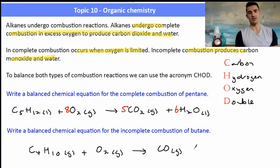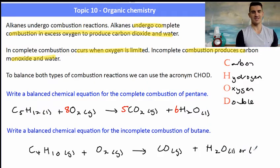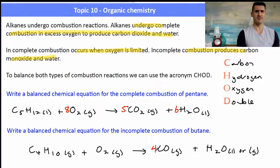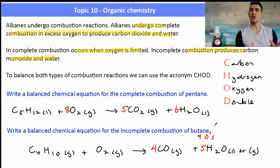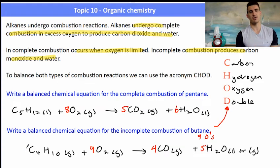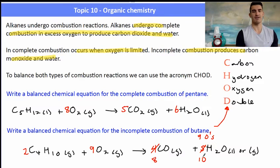For the incomplete combustion of butane forming CO(g) and H₂O(l): balance carbons with 4 in front of CO, balance hydrogens with 5 in front of H₂O. Now we have 4 + 5 = 9 oxygens on the right — nine is odd, which is hard to balance. This is where we apply D for Double: place 9 in front of O₂, then double everything else. This works every single time.